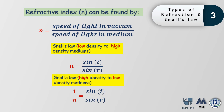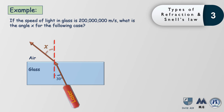We can calculate refractive index using the speed of light in vacuum compared with the speed in a medium, or using angles with Snell's Law — identifying whether the ray goes from low to high density or vice versa. For example: the speed of light in glass is 200 million meters per second, and we need to find angle x. Light travels from glass to air — high density to low density — so with an angle of incidence of 30 degrees, the angle of refraction must be higher.